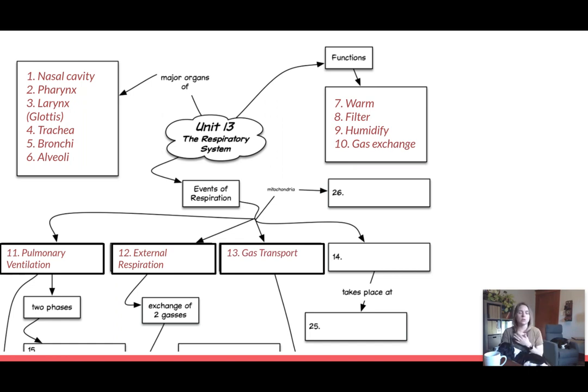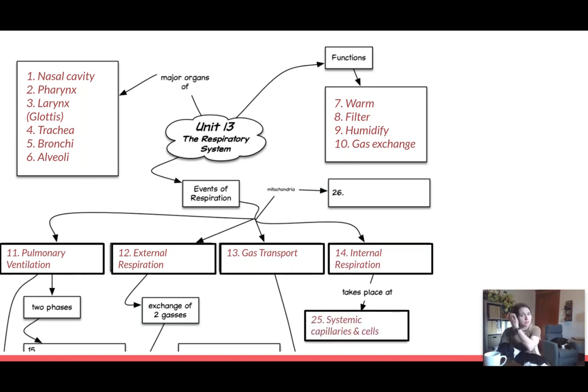External respiration is when gas exchange is going from my respiratory passageways and into the alveoli. So that exchange of gases in my lungs, the pulmonary circuit area is my external respiration. Gas transport then is the next step. And then internal respiration is when finally my circulatory system is dropping off those gases, oxygen, at my actual systemic tissues, at my systemic capillaries as well as my systemic cells.